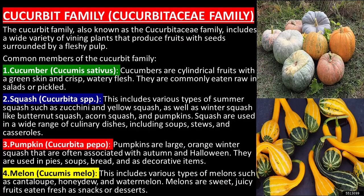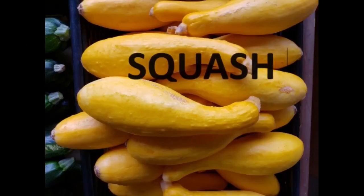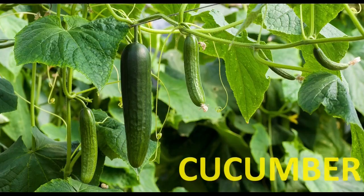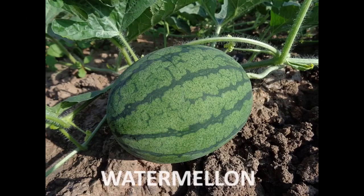The cucurbit family, Cucurbitaceae family, includes a wide variety of vining plants that produce fruits with seeds surrounded by a fleshy pulp. Common members of the cucurbit family include squash, cucumbers, pumpkins, and melons.